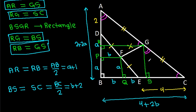So we get RB equal to GS, that is A plus 1, and BS equal to RG, that is B plus 2.